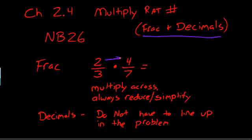So first, we're going to multiply the numerators together. So in this case, 2 times 4 would give us 8. And then we're going to multiply our denominators together. That's the bottom number. 3 times 7 equals 21.